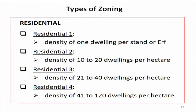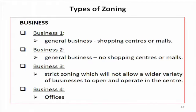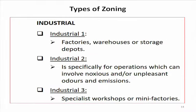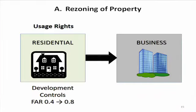Then you also have industrial zonings — that would be your manufacturing areas. And then you have business zonings: business one, two, three, and four, which cater for everything from a small business park up to big office blocks. After we look at our zoning, we know that we change our use rights to become something else so that we can use the property for the purpose we want.